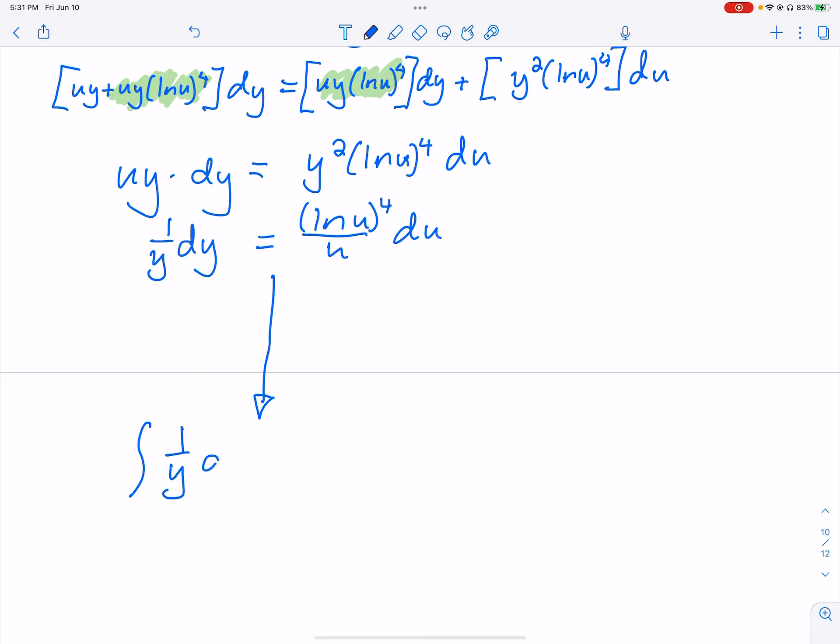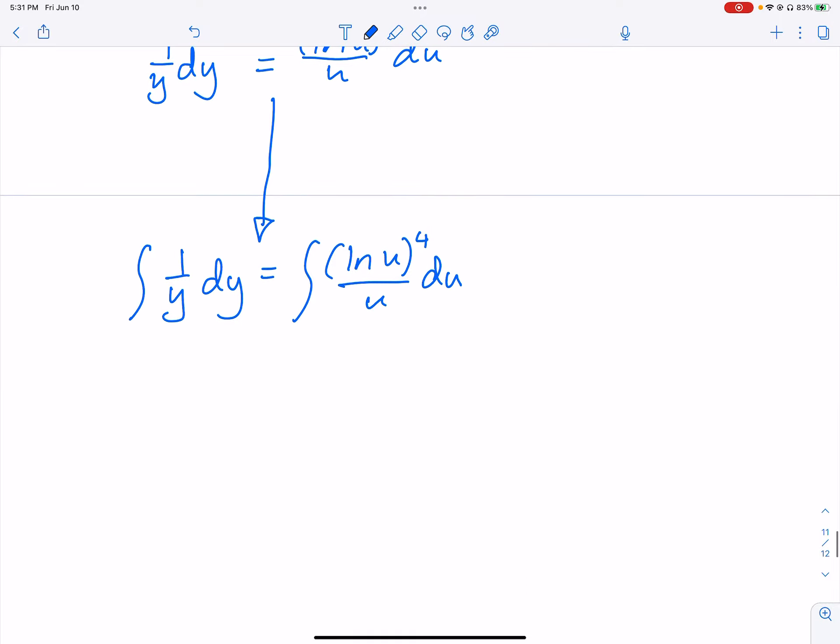So I'm going to get the u's to the right side. So we get ln of u to the fourth power over u du. And then on the right side, I'm going to divide by y squared. This gets me 1 over y dy. Not so bad once we get down to that. This is separable. I can go ahead and take my integral.